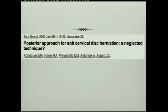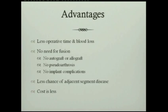A Brazilian surgeon asked: was the posterior approach a neglected approach? Despite all the literature supporting posterior foraminotomy, most spine surgeons still favor anterior procedures. Looking at the advantages of posterior foraminotomy: it offers less operative time, less blood loss, no need for fusion, no concern about autograft or allograft complications, no risk of pseudarthrosis, no implant complications, less chance of adjacent segment disease, and significantly lower cost — no implant, no bone graft, no cages.